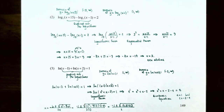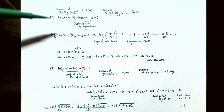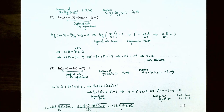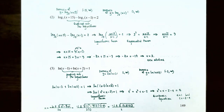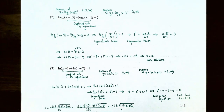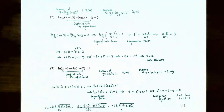Check the domains: log₃(x+15) has domain (−15, ∞), and log₃(x−1) has domain (1, ∞). Since x = 3 is greater than 1 (and greater than −15), it is in the domain of both expressions. Therefore x = 3 is the only solution.